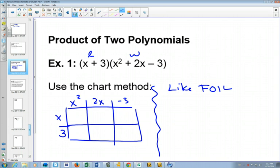Can you fill in what it would be if you did x times x squared? You would get x cubed. And if you did x times 2x, you get 2x squared. x times minus 3, minus 3x. 3 times x squared will be 3x squared. 3 times 2x will be 6x. And 3 times negative 3 will be negative 9.